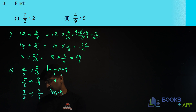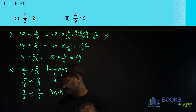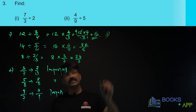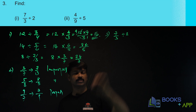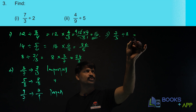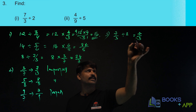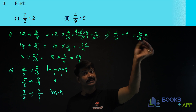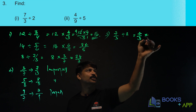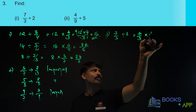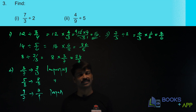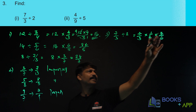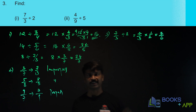Now question number 3: Find 7 by 3 divided by 2. As usual, when you divide, you multiply by taking the reciprocal of 2. The reciprocal of 2 is 1 by 2. So the answer is 7 by 6. If you want, you can convert this into a mixed fraction.